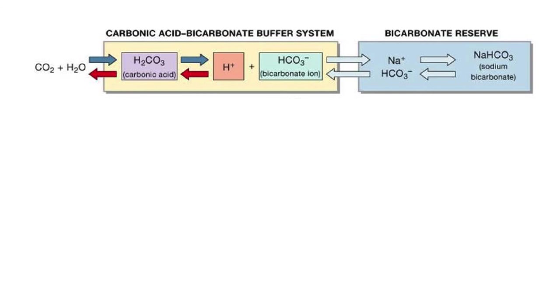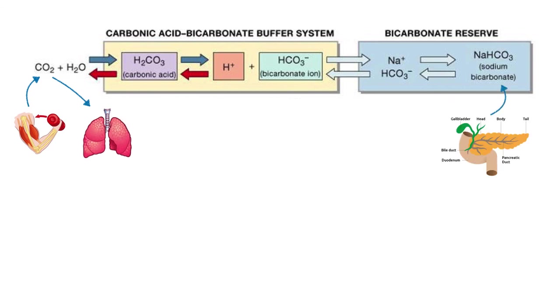So, this carbonic acid bicarbonate buffer system in our blood helps keep our blood mostly from becoming too acidic, but sometimes also from becoming too basic. The buffer system is maintained by the production of carbon dioxide gas by our muscles and by its removal via our lungs. And also, on the other end, by the production of sodium bicarbonate by our pancreas and the removal of extra bicarbonate ions via our kidneys and our urine.